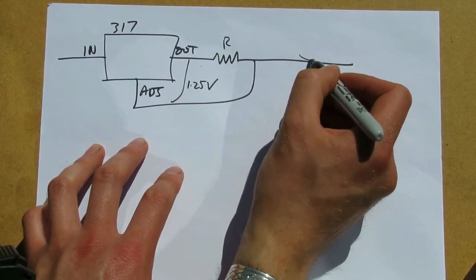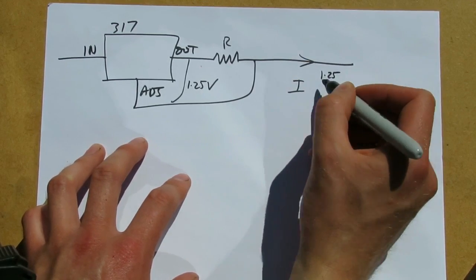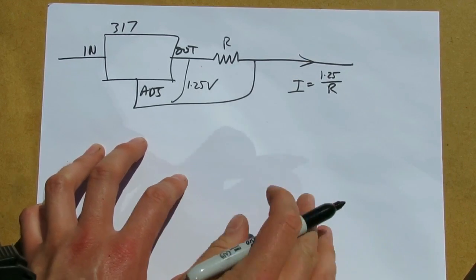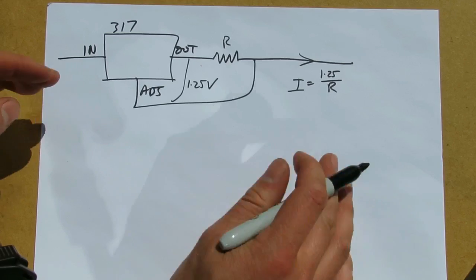But that appears across the series resistor, so therefore the current flowing must be the voltage, which is 1.25 volts, over R, which is a constant current source.